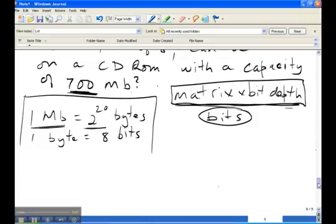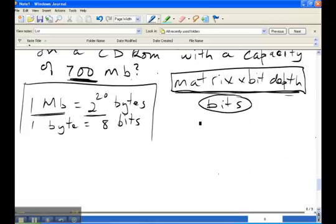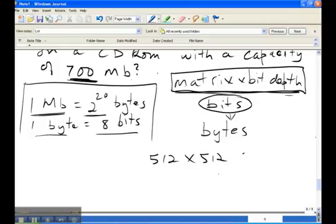Since we are going to try to calculate the memory in bytes, we will have to convert from bits to bytes. And that's a straightforward process because 1 byte equals 8 bits. So when we multiply the matrix times the bit depth, 512 by 512 times 8, that gives us an answer in bits. And to convert to bytes, we simply divide by 8. So that would give us 512 by 512.